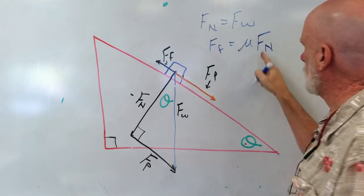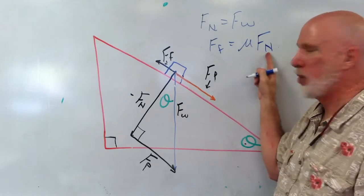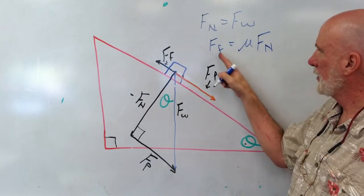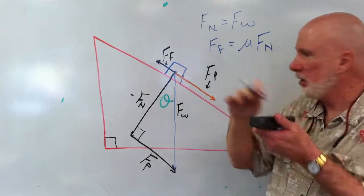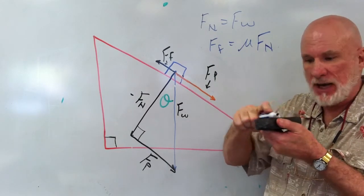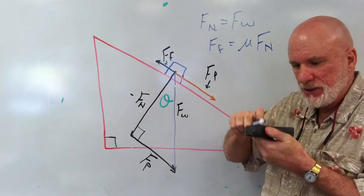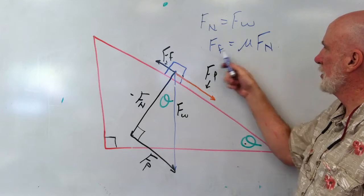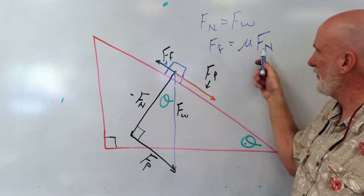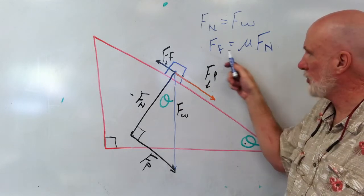Let me just show you. So it's going to be Fn. So it's going to be based on Fn. So it's going to be a portion of Fn. Now, if it's horizontal, Fn is the same as Fw. So the harder I push, the greater the weight, the greater the friction. And that makes sense. Friction and Fn are proportional. They're directly proportional.